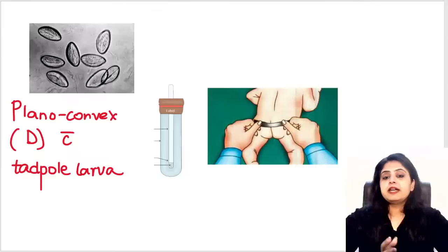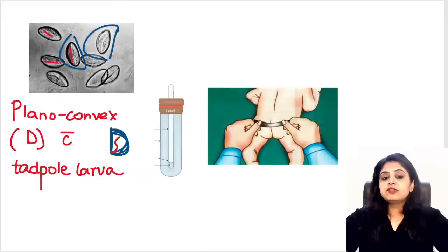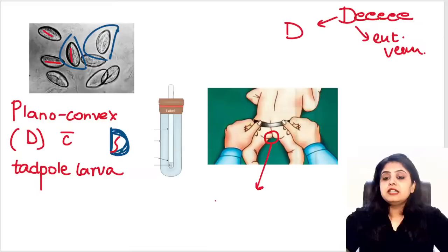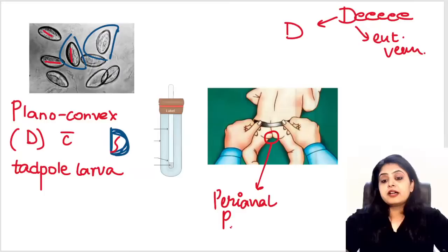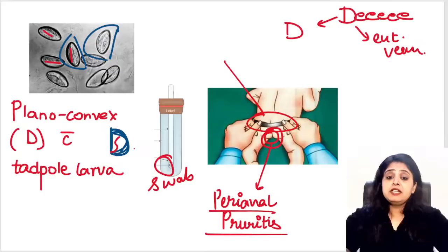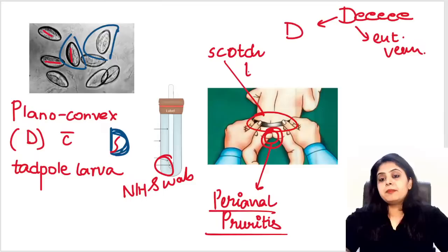The egg of Enterobius vermicularis is D-shaped — plano-convex — with a tadpole larva inside. Mnemonic: D for shape and E for Enterobius. This egg is NOT seen in stool; it's seen in the perianal region. The patient presents with perianal pruritus. You pick it up with a swab or a scotch tape method from the perianal region.